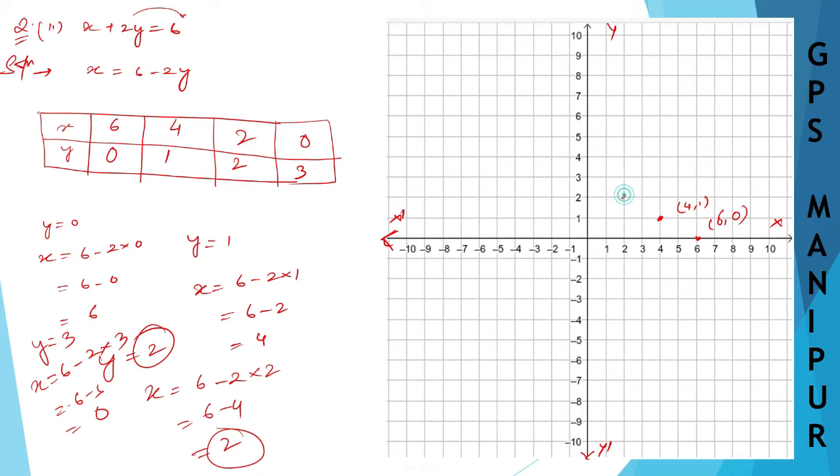When x is 0 and y is 3, this is point (0, 3). Now if I join these lines, we get our graph.